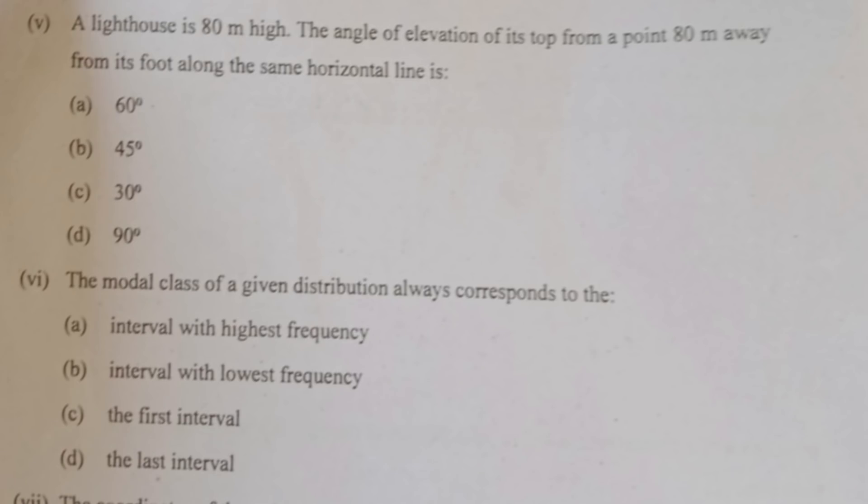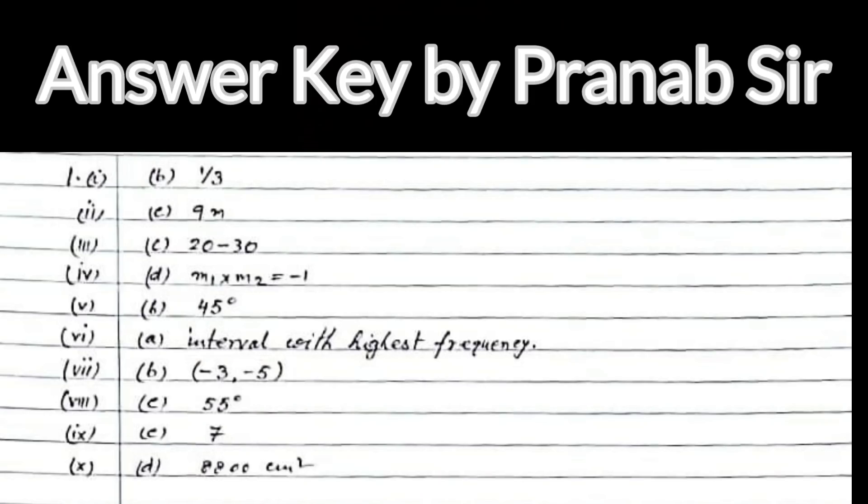Question 6: the modal class of a given distribution always corresponds to the interval with highest frequency, option A. Question 7: the correct option is option B, minus 3, minus 5. Question 8: ABCD is a cyclical quadrilateral, the correct option is C, 55 degrees.